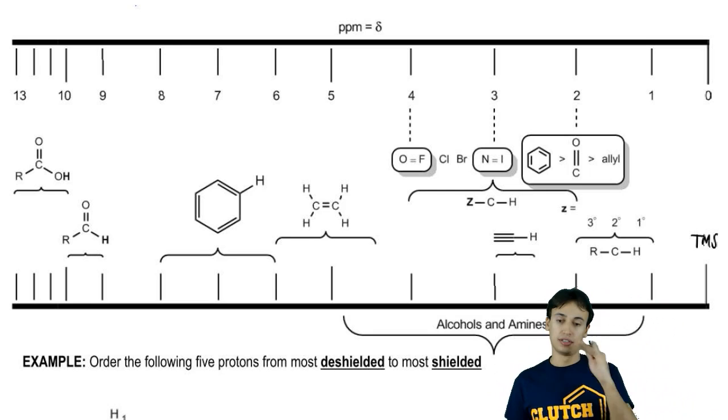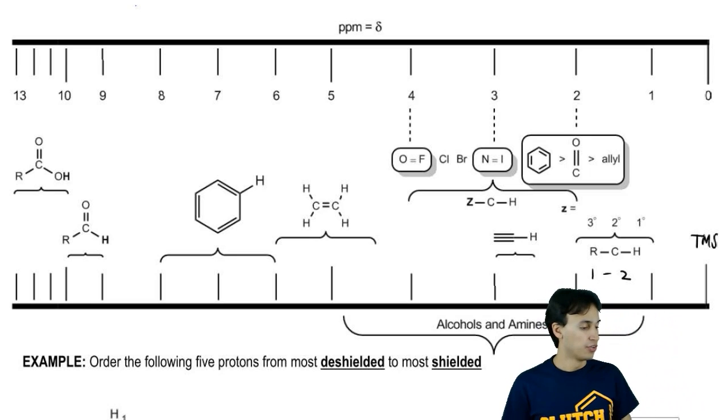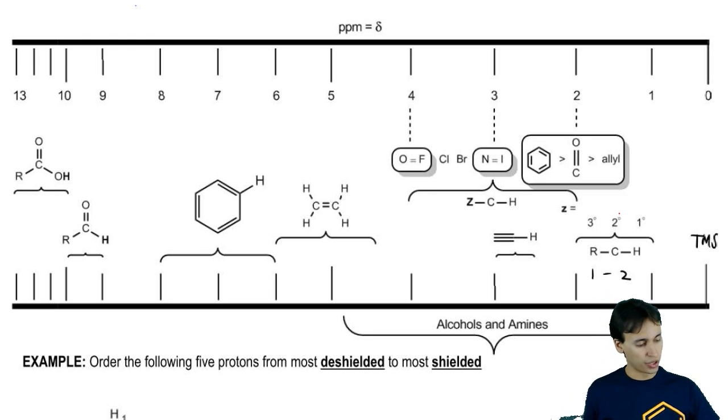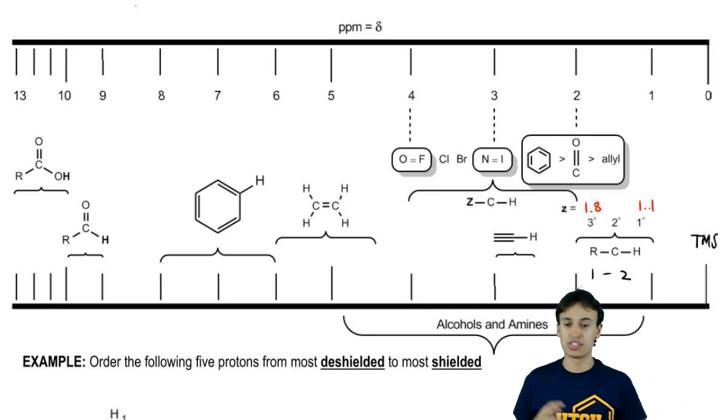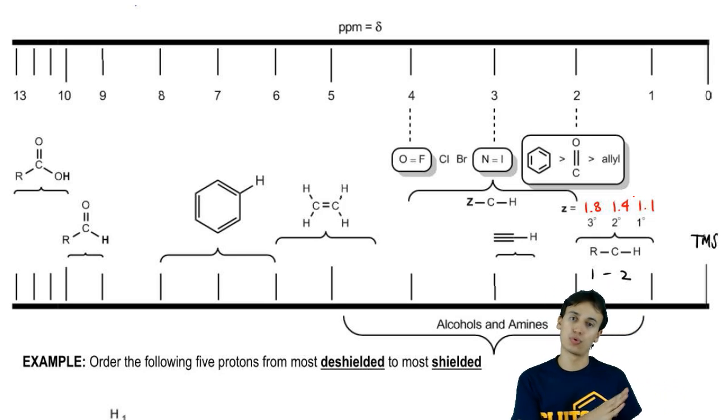We talked about alkanes being in the one to two range. It turns out that alkanes actually follow a pattern that the more substituted the alkane, the more R groups it has, the higher it's going to result. That means that your professor may want you to be able to tell the difference between a primary alkane and a tertiary. Typically a tertiary one could come out at 1.8 whereas a primary one might come out at 1.1. So it's little differences here and there, and then a secondary would be somewhere in the middle like 1.4. All of these ranges are definitely variable. It doesn't have to be exactly that, but I'm just trying to illustrate how as you move towards tertiary, you actually get a little bit more deshielded.